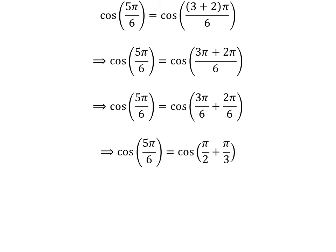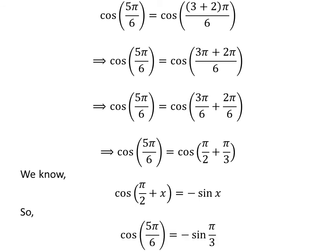Cancelling out the common factor in the numerator and the denominator gives us cosine of 5 times pi upon 6 is equal to cosine of half of pi plus pi upon 3. We know the famous trigonometry identity: cosine of half of pi plus x is equal to minus sin of x. The proof has been explained in the linked video. Application of the above identity gives us cosine of 5 times pi upon 6 is equal to minus sin of pi upon 3.